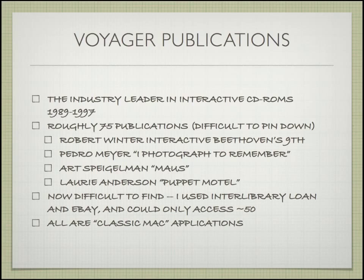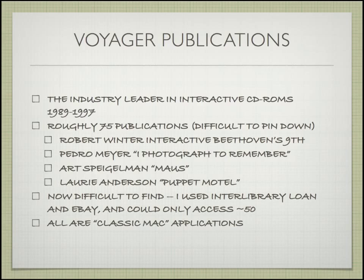The Voyager publications number on the order of 75 to 100 unique publications. Maus was an example. There was interactive Beethoven's Fifth, which was an interesting experiment in how you present music along with interactive capabilities to search through the music and learn about the themes. There was also Laurie Anderson, a performance artist, who did this strange game called Puppet Motel. There are quite a few curious and interesting things, and I was able to track down a large number of them — on the order of 50.